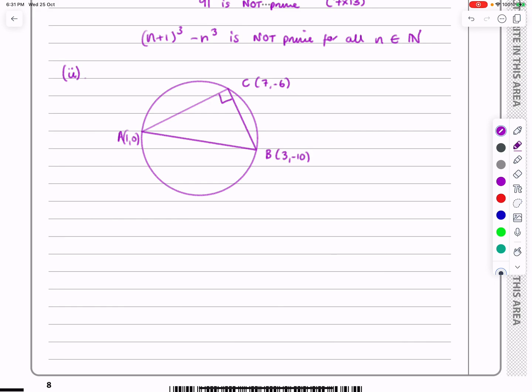Just for the geometric argument, the angle in a semicircle. So we need to prove ACB is a right angle.